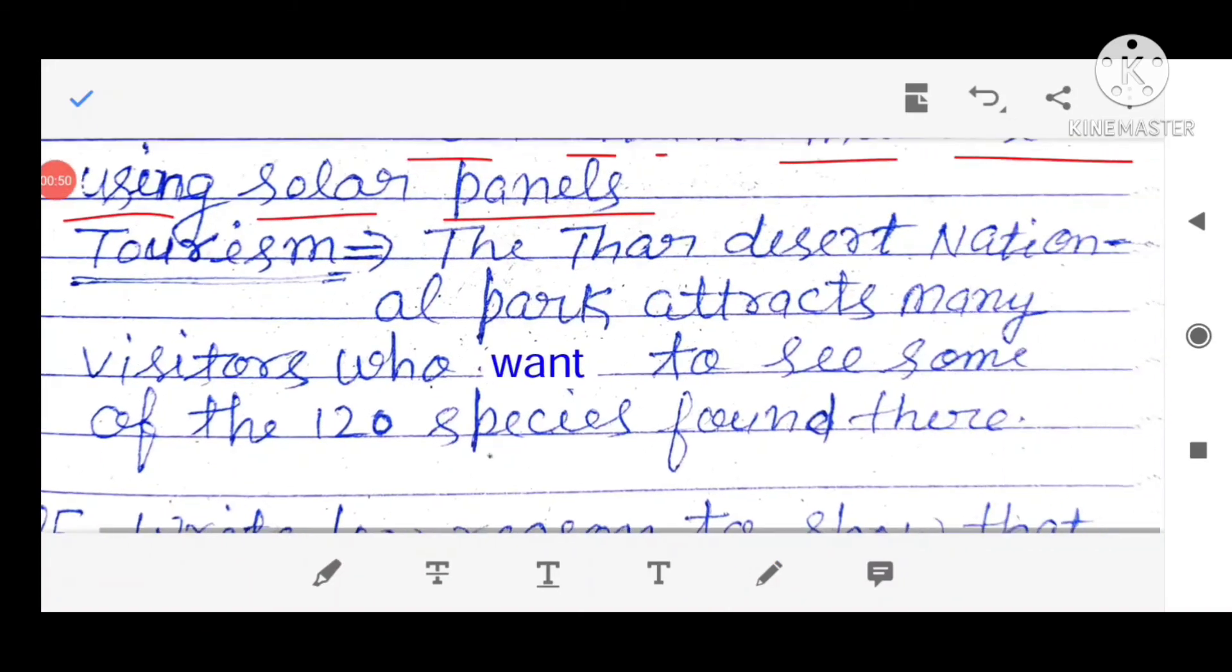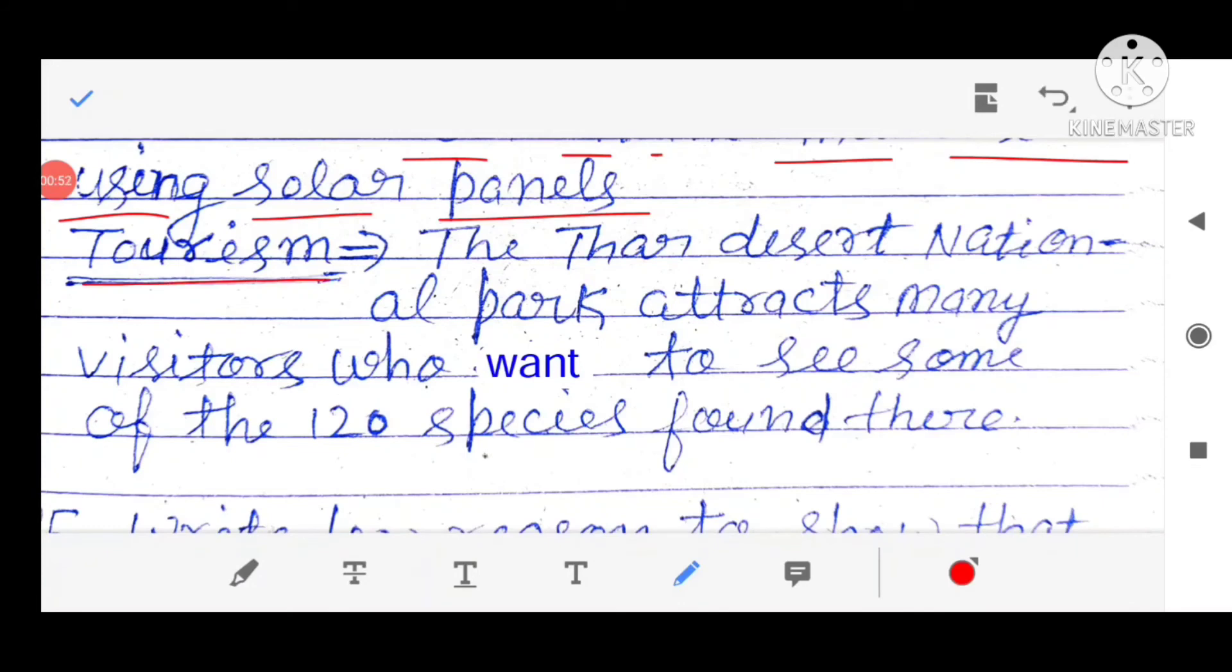Tourism. The Thar desert national park attracts many people. Visitors who want to see some of the 120 species found there.